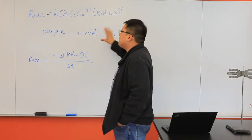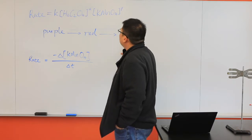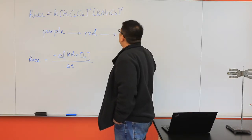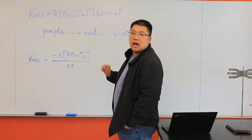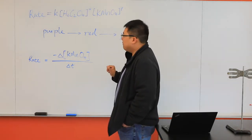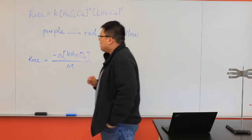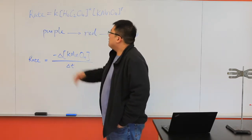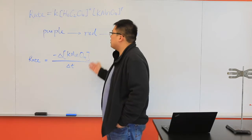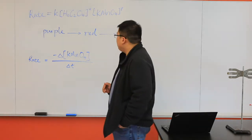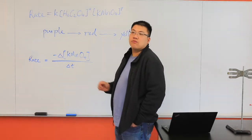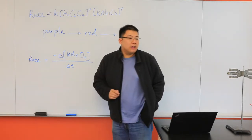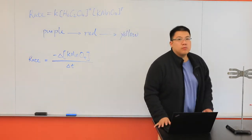As the reaction proceeds, it will eventually form a complex product, which gives you a yellow color solution by the end. The rate of the reaction can be determined as negative delta concentration of potassium permanganate divided by the time that elapsed for this reaction. So let's take a look at the actual experiment.